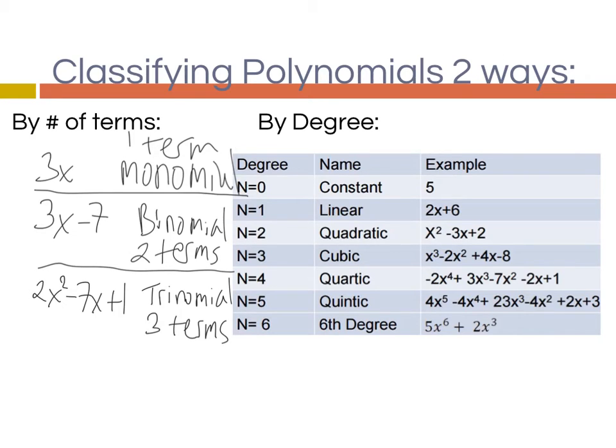The second part would be by degree. Degree meaning our exponent. So if you look at this one here, it is a constant. There's no x or any other variable. So its degree is 0, and it's called a constant. The second one is linear. It has a degree of 1. Remember, if we don't have an exponent up there, it's really like it's a 1. So it's 2x to the 1st. It's linear.